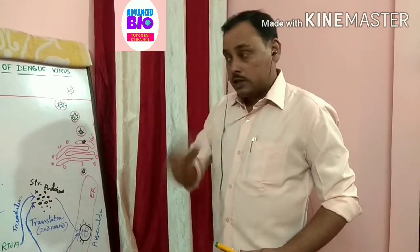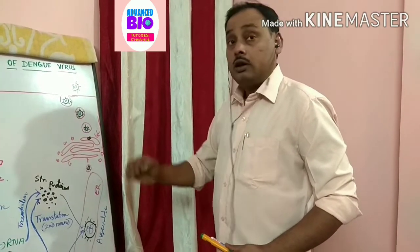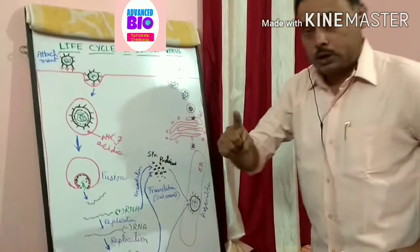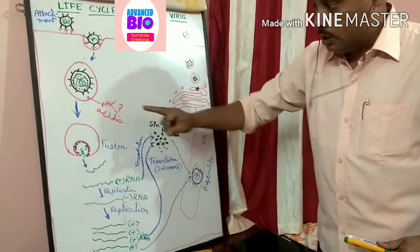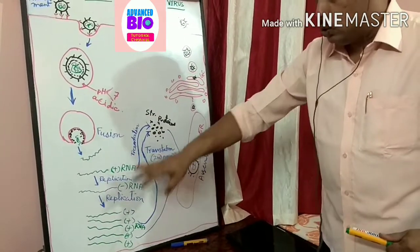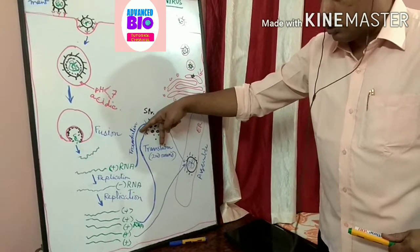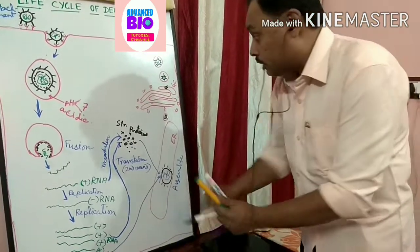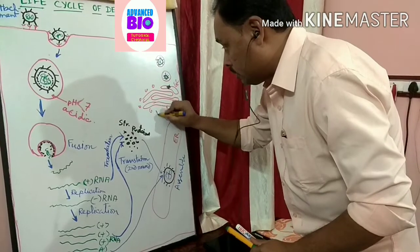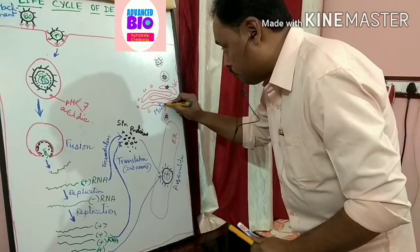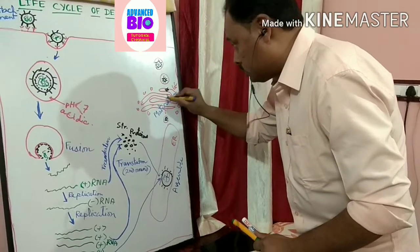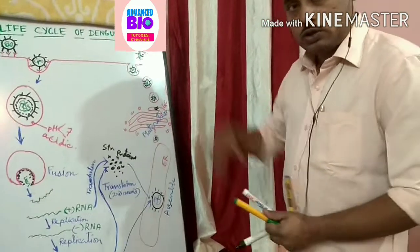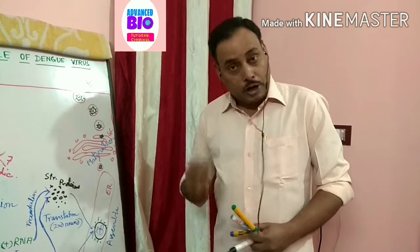Lastly, the main steps of this life cycle are: number one, attachment; number two, phagocytosis; number three, fusion; then two rounds of replication and two rounds of translation; then assemblage; then maturation, which takes place inside the Golgi complex; and then the virus comes out. This is the total procedure.